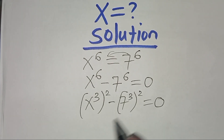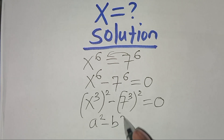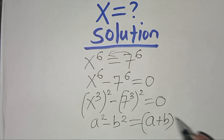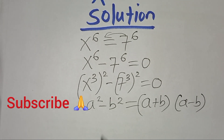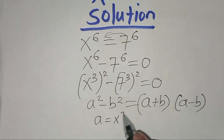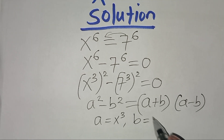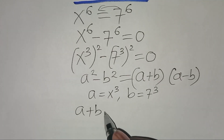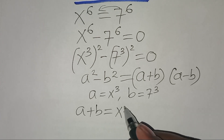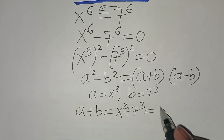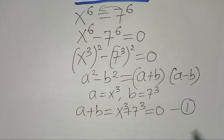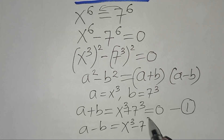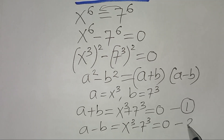Now this is in the form of a squared minus b squared, which is the difference of two squares, which you can express as (a + b)(a - b). In this case, a is equal to x to the power 3 and b is equal to 7 to the power 3. So a plus b gives x cubed plus 7 cubed equals 0 — call this equation 1. And a minus b gives x to the power 3 subtract 7 to the power 3 equals 0 — call this equation 2.